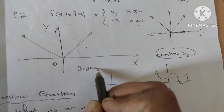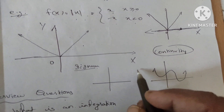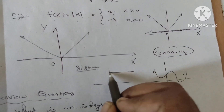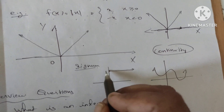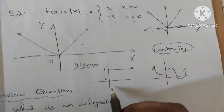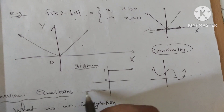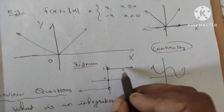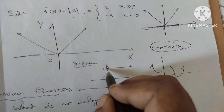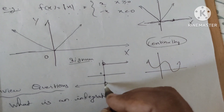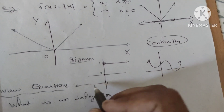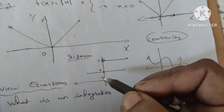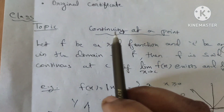Another example: the Signum function. The Signum function is drawn. At the point, this is 1 and this is 0. When you draw this graph, there is a hole — you can see the hole. You have to lift the pen. That hole represents discontinuity. That is the meaning of continuity.